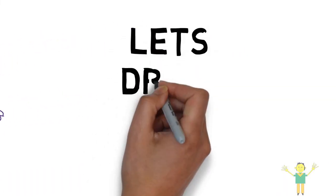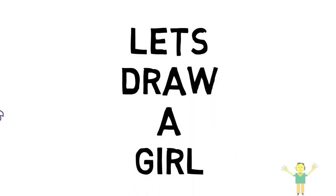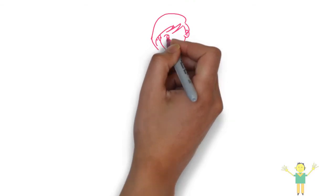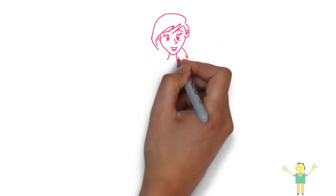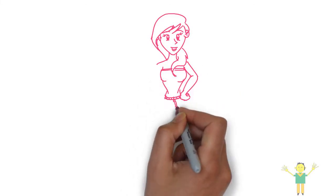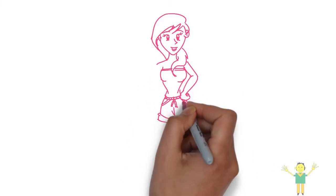Let's draw a girl. Girl is very confident. She has long ears. She is fond of dancing. She wants to be a musician.